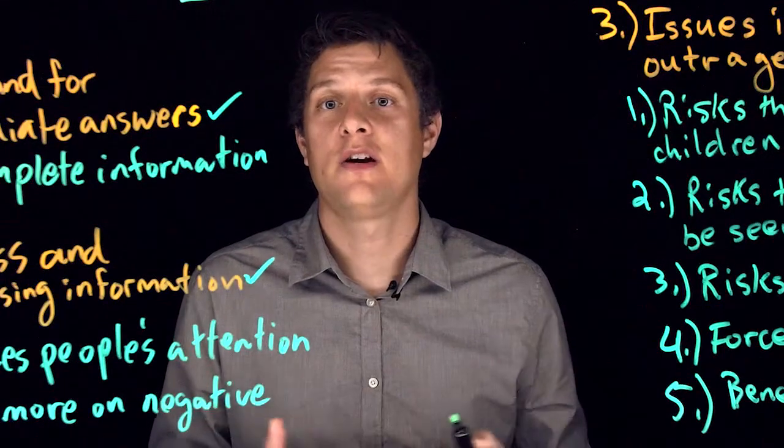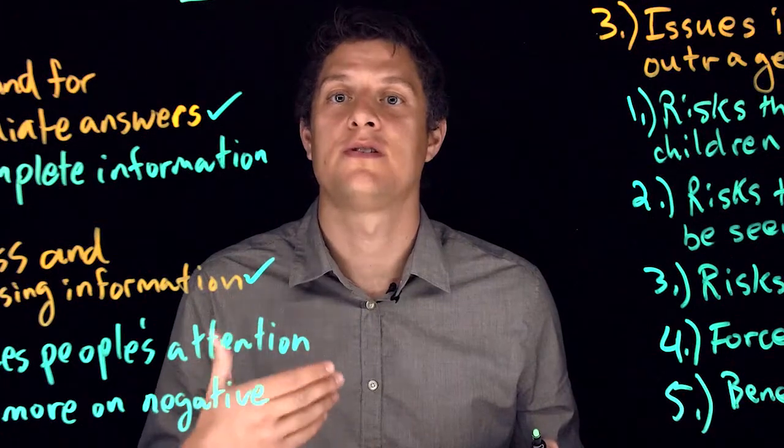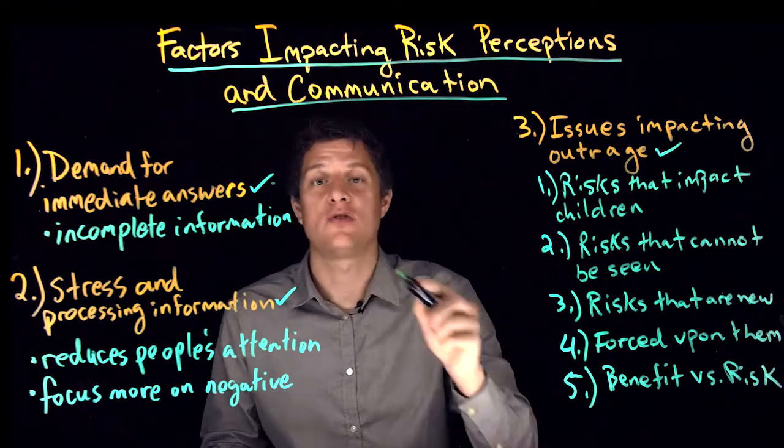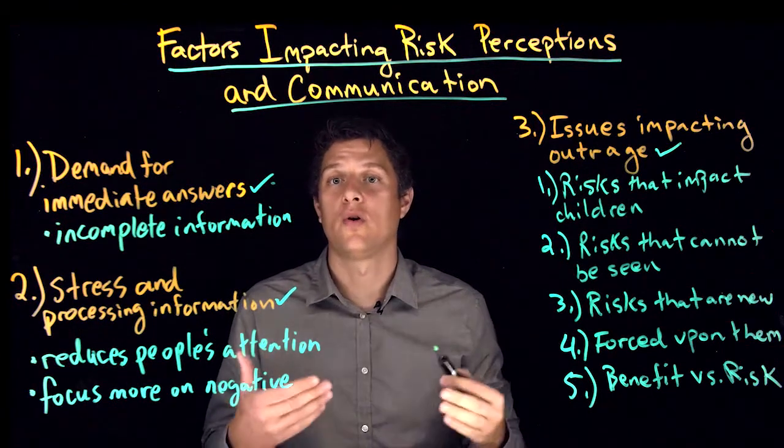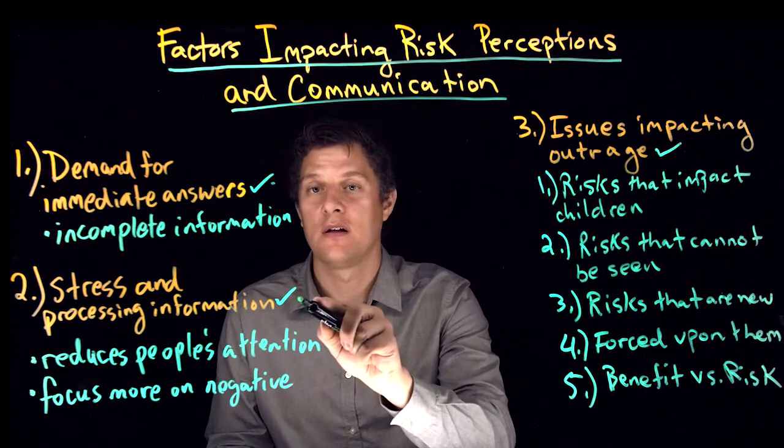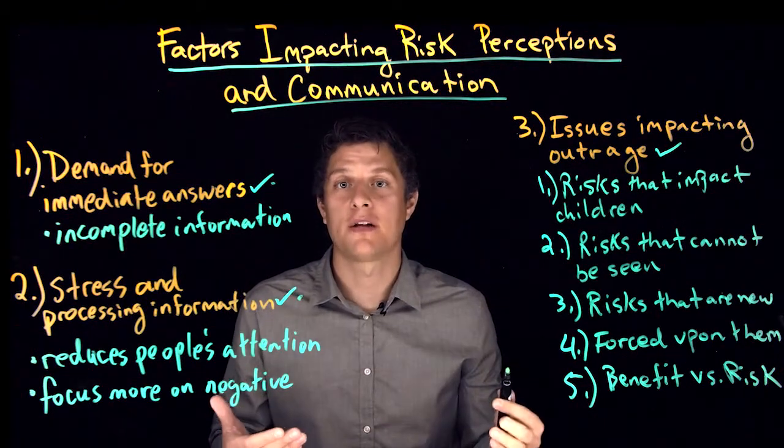In summary, this video highlighted three factors that complicate people's perceptions of risk. These factors include people's demands for immediate answers in situations of uncertainty, the role of stress in how audiences process information, and issues that impact the general public's outrage.